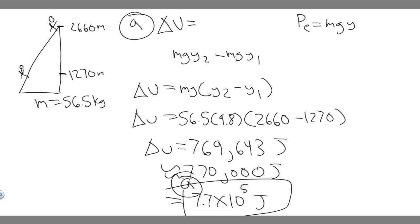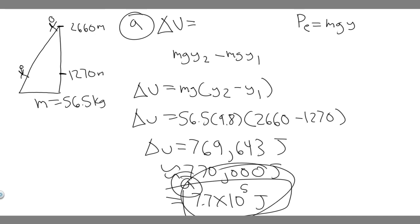For Part B, they want the minimum work required of the hiker. The key thing to know is that the change in potential energy equals the minimum work. So the minimum work required is the same number: 7.7 × 10⁵ joules. Parts A and B have the same answer.